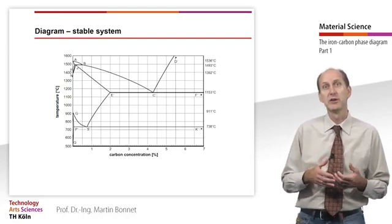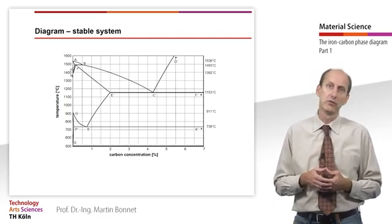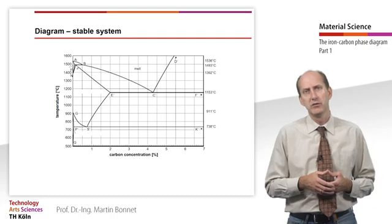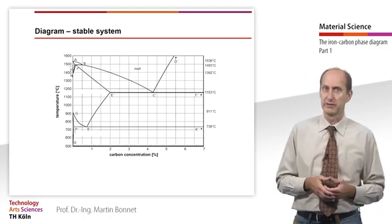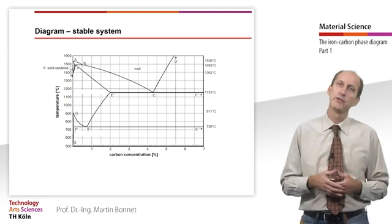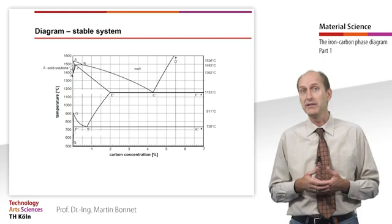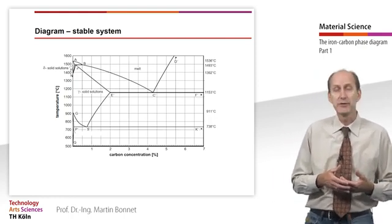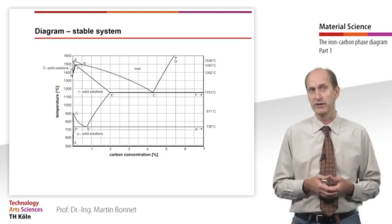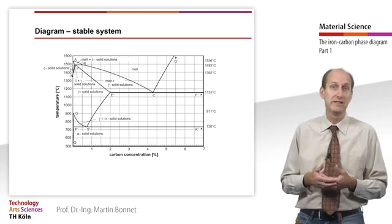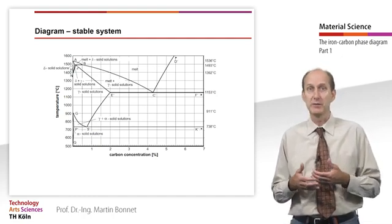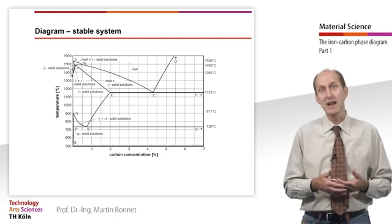This shows the stable system for an infinitely slow cooling process during which carbon precipitates out as graphite. Pure iron solidifies to form delta iron at 1536 degrees Celsius, transitions to gamma iron at 1401 degrees Celsius, and further transitions to alpha iron at 911 degrees Celsius. Thus, in the two-phase area between delta and gamma iron, both phases must be present, just as in the two-phase area between gamma iron and alpha iron, both gamma and alpha iron must be present.